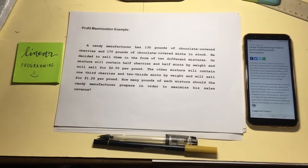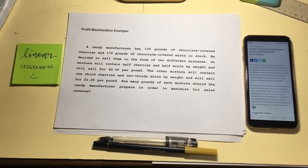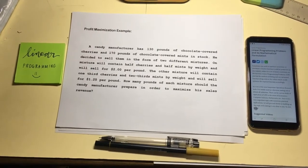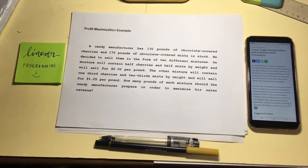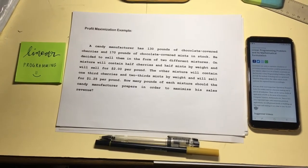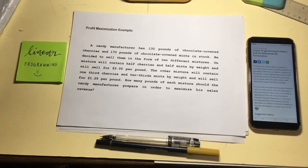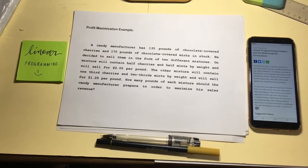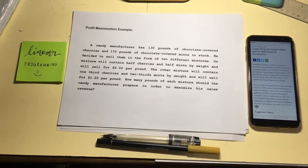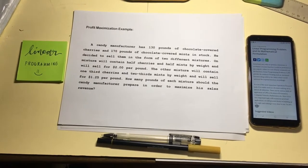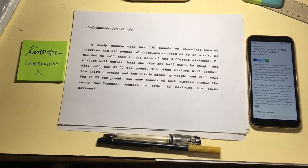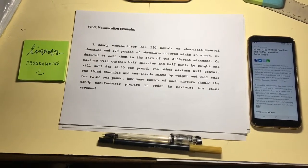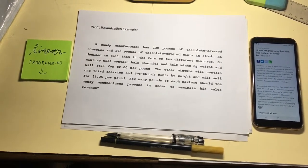The problem says: A candy manufacturer has 130 pounds of chocolate covered cherries and 170 pounds of chocolate covered mints in stock. He decided to sell them in the form of two different mixtures. One mixture will contain half cherries and half mints by weight and will sell for $2 per pound. The other mixture will contain one third cherries and two thirds mints by weight and will sell for $1.25 per pound. How many pounds of each mixture should the candy manufacturer prepare in order to maximize his sales revenue?